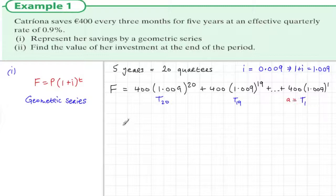Now we sum the series to work out the value of investment. The first term, if you stick it in the calculator, works out to be 403.6. The common ratio is 1.009, and there are 20 terms.